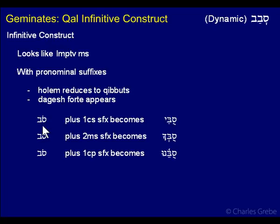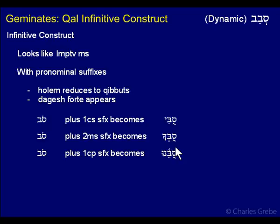We couldn't have the dagesh forte before because it was at the end of the word. Now with hollow verbs — 'kum' for instance — when you add pronominal suffixes to the infinitive construct of 'kum', you don't get reduction because you have a mater. You can't reduce the u or the e on 'seam', but you can reduce the holem — this is not a mater. So if you add the 2ms suffix 'ha', you get 'subecha', showing reduction and the dagesh forte, and you get 'subenu' when you add the 1cp suffix.